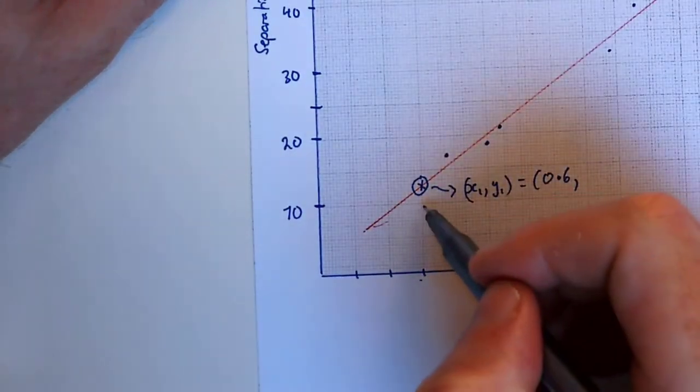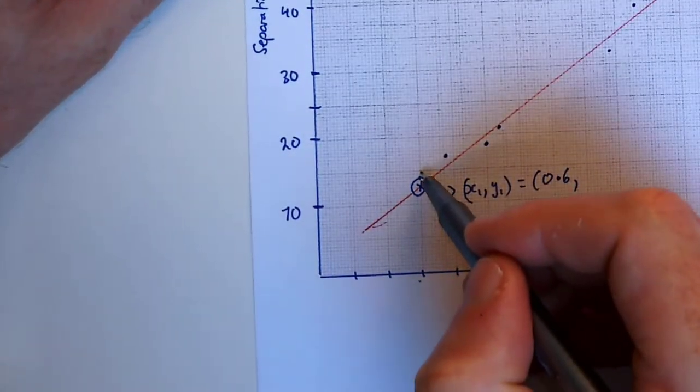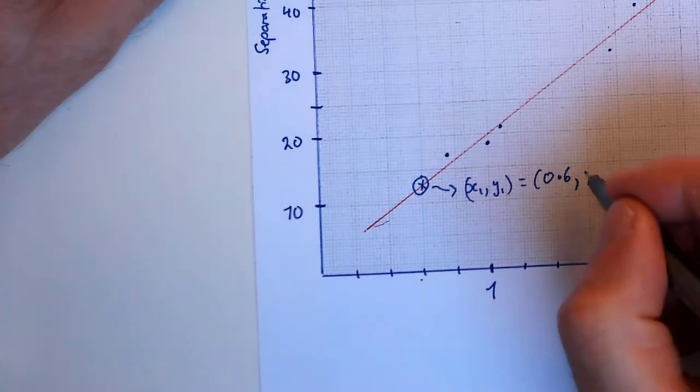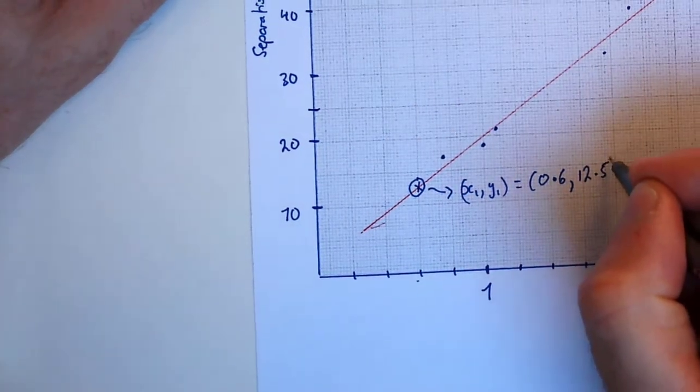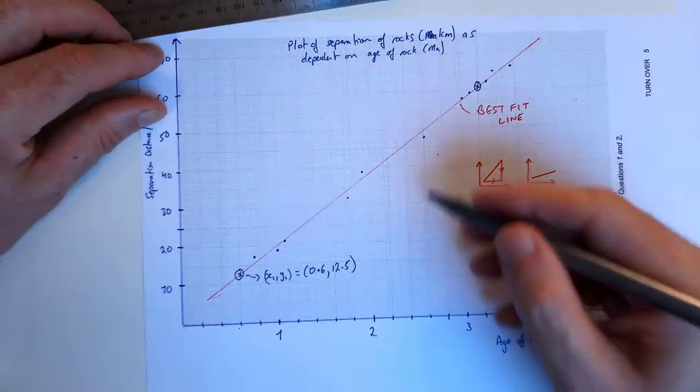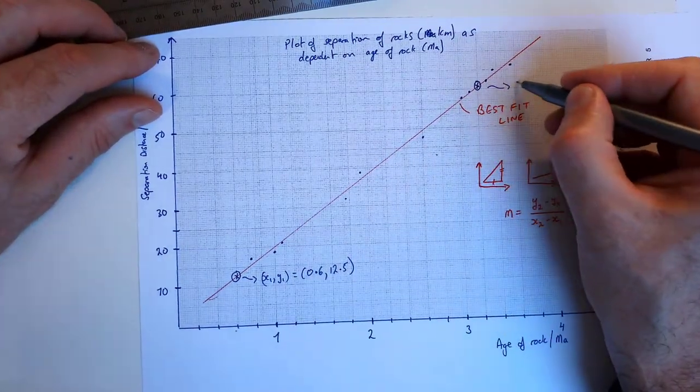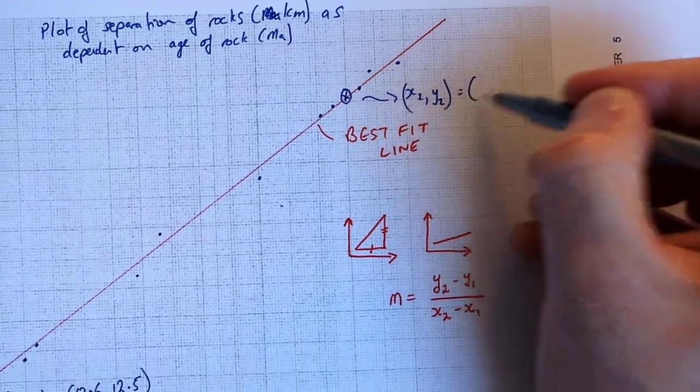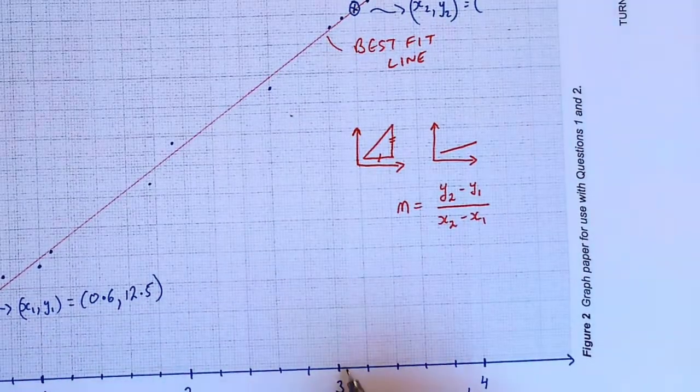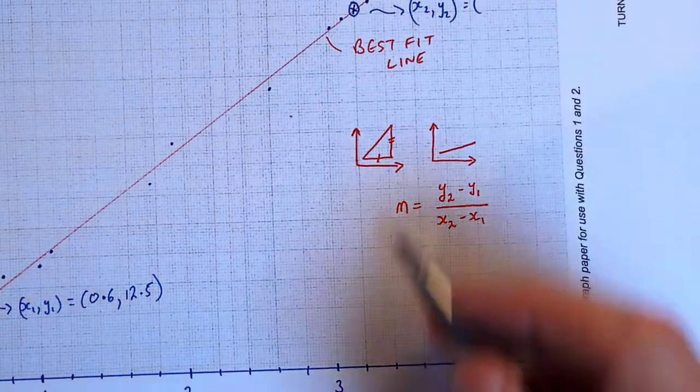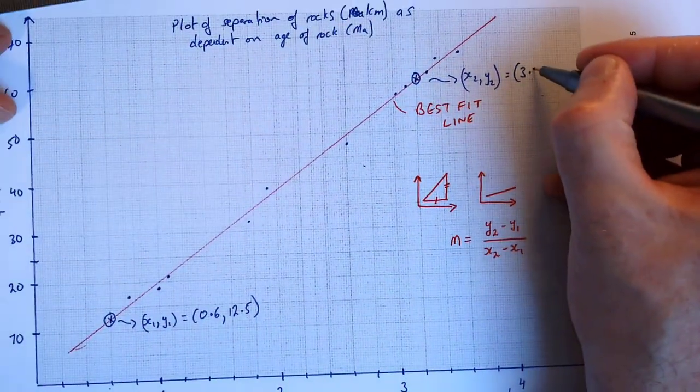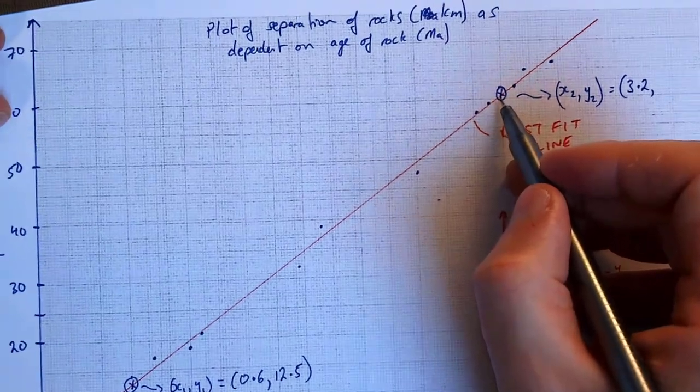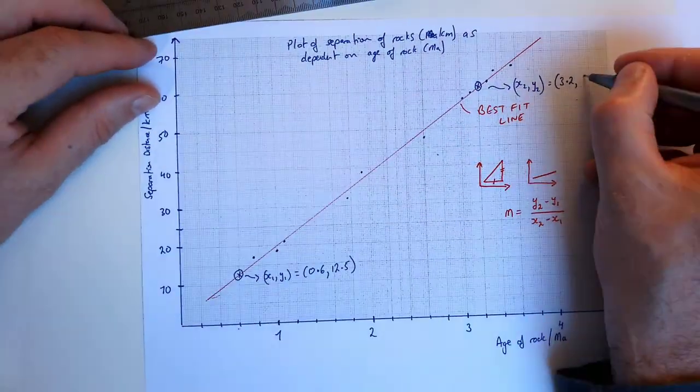And what's the x value there? It's 0.2, 0.4, 0.6. What's the y value? Well that's 10, that's 15, so it's I would say 12.5. And the same here, x2, the x value here is 3.2, and the y value is 60, I'll say 61.